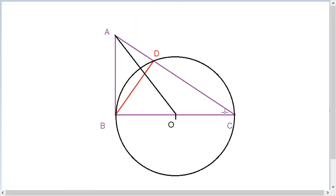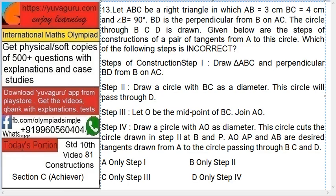Draw a circle with BC as a diameter. This circle will pass through D. See this: BC as a diameter and it will pass through D. Next, let O be the midpoint of BC. Join AO.